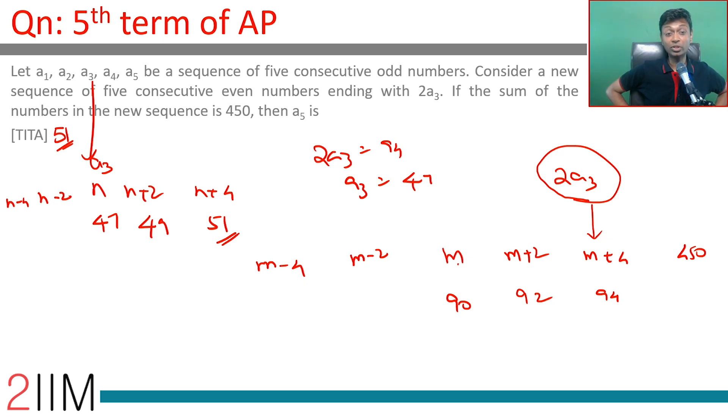Sum of these five terms is 450, middle term is 90. That means the last term is 94. Last term is 2*a3. 2*a3 is 94, a3 is 47, a4 is 49, a5 is 51.